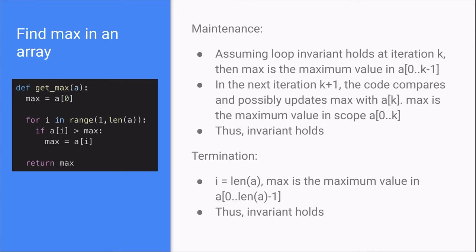At maintenance, assuming loop invariant holds at iteration k, then max is the maximum value in a from index 0 to index k minus 1. In the next iteration, k plus 1, the code compares and possibly updates max with a at index k. Max is the maximum value in scope a from index 0 to index k. Thus, the loop invariant holds.